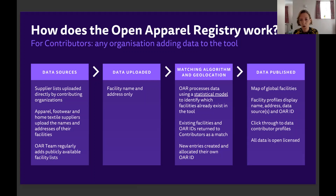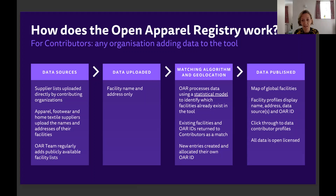Where a facility has already been contributed, it's returned to the contributor as a match. Where an entity is being uploaded for the first time, it gets created as a new facility and allocated its own OAR ID. When we switch over to the demo, you'll see a map of global apparel facilities — there are now over 63,000 facilities in the database. For each facility profile you can see the name, address, data source, contributing organizations, and the unique OAR ID. We are a neutral and open data platform, which is a big reason people are prepared to share their data with us.